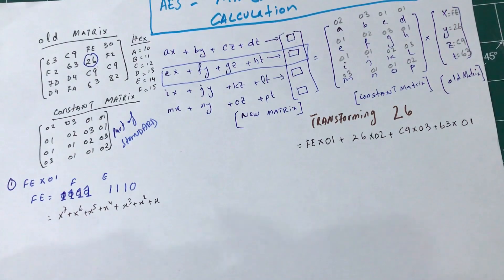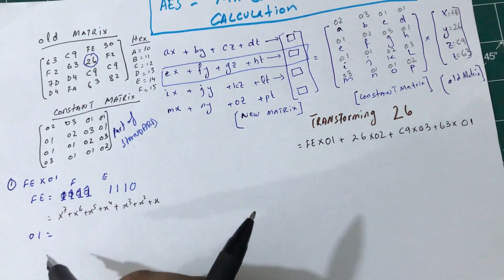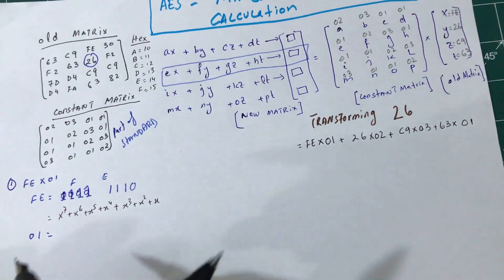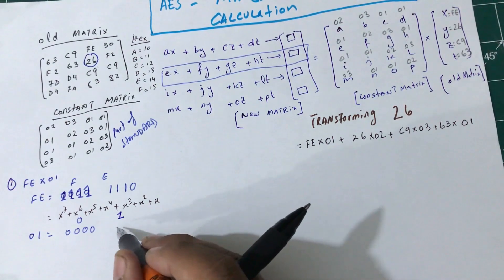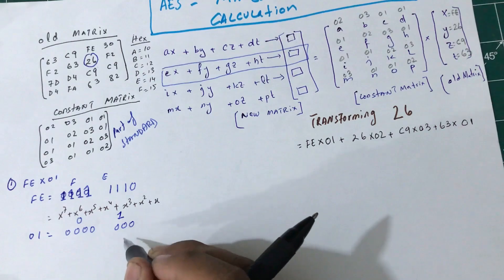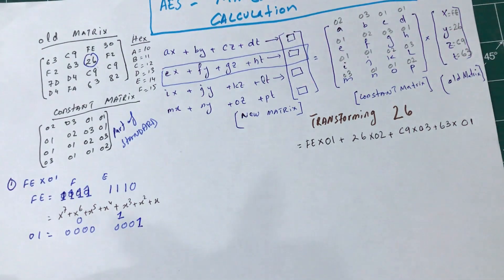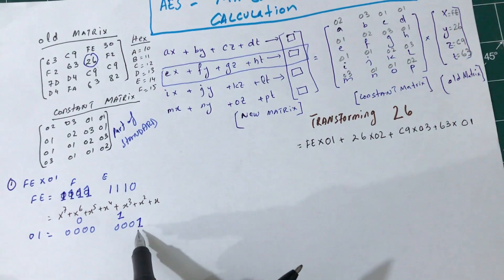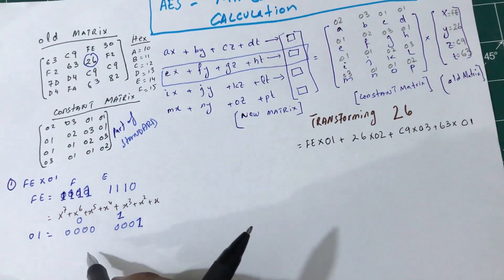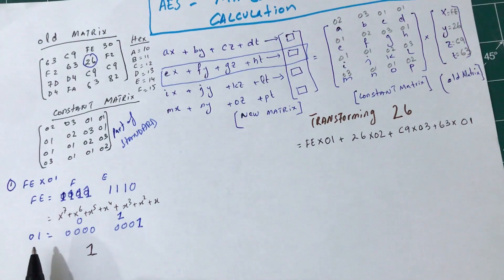Now the same thing for 01. What is 01 in hex? 01 is simply 0000 0001. x⁰ is just 1, any number raised to 0 is 1. So even in polynomial form, 01 is just going to be 1.